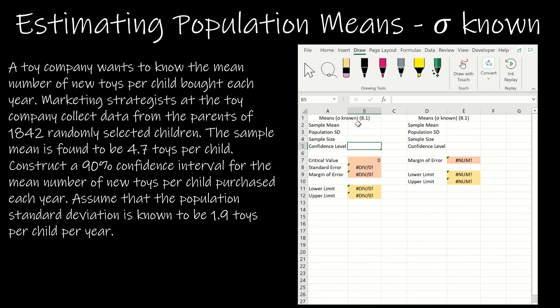So in this case, we have a toy company who wants to know the mean number of new toys per child bought each year. Marketing strategists at the toy company collect data from the parents of 842 randomly selected children. So first of all, n is greater than 30, and this is randomly selected. So we should be good to go for the central limit theorem. 842 is going to be our sample size. So I'm just going to fill it in as we read.